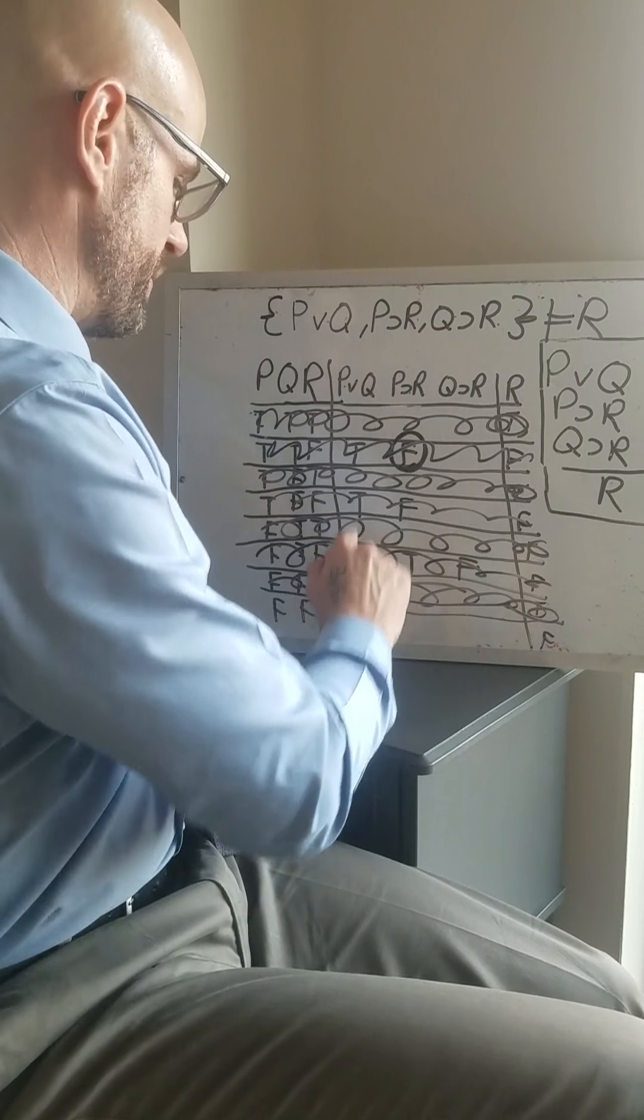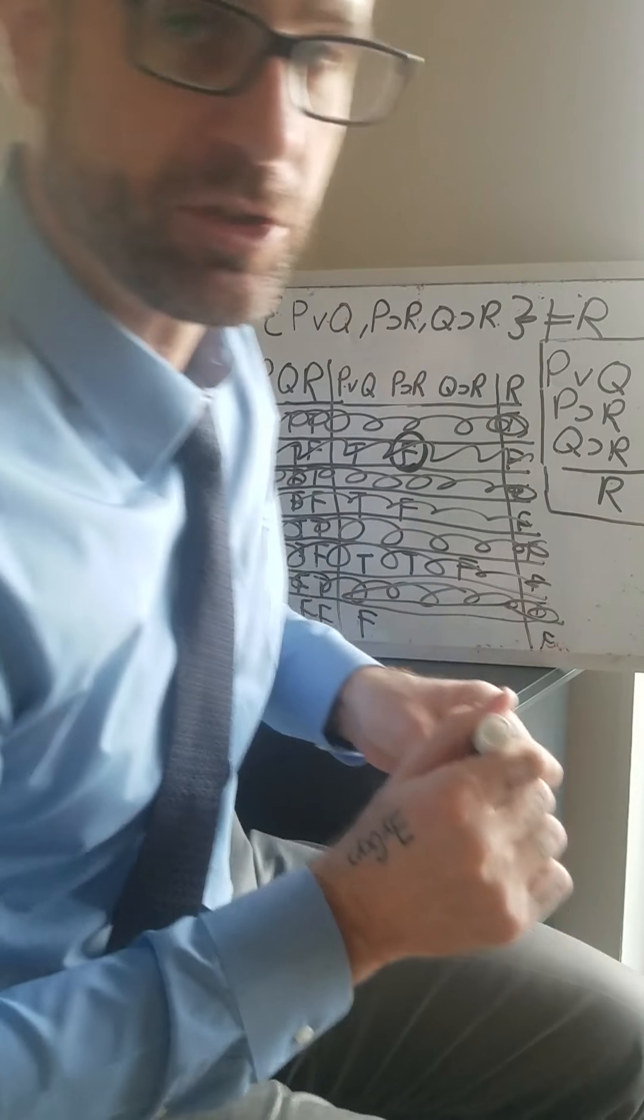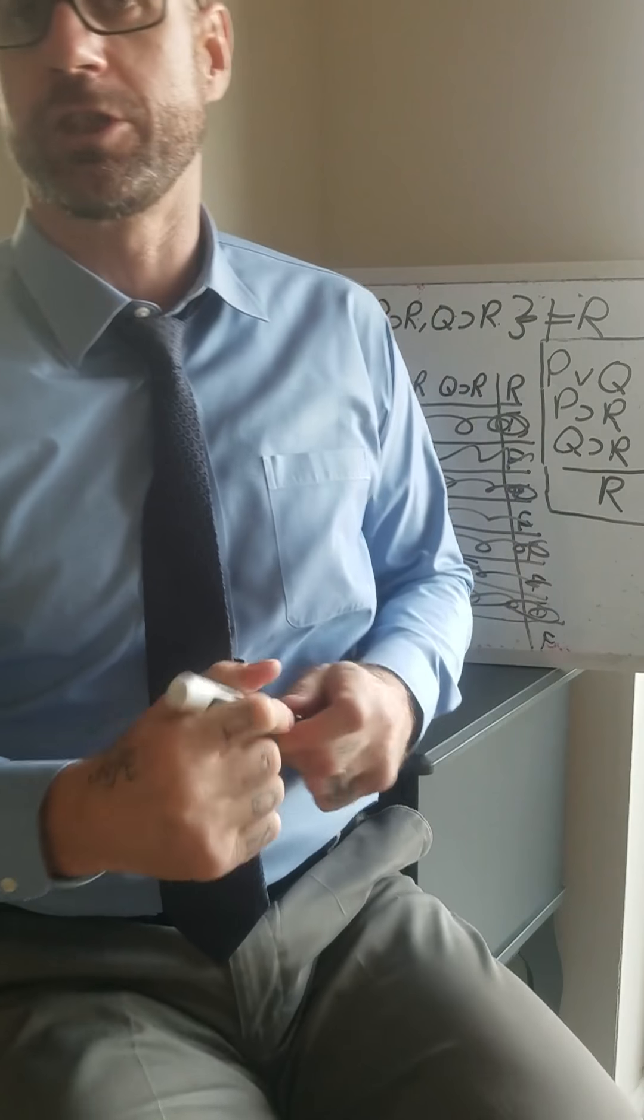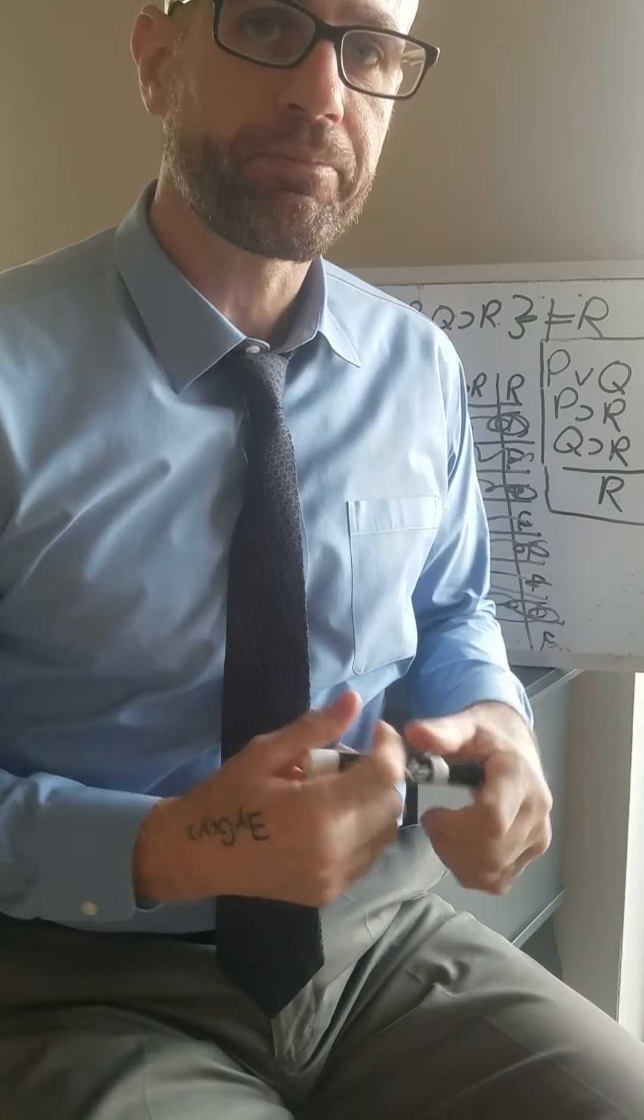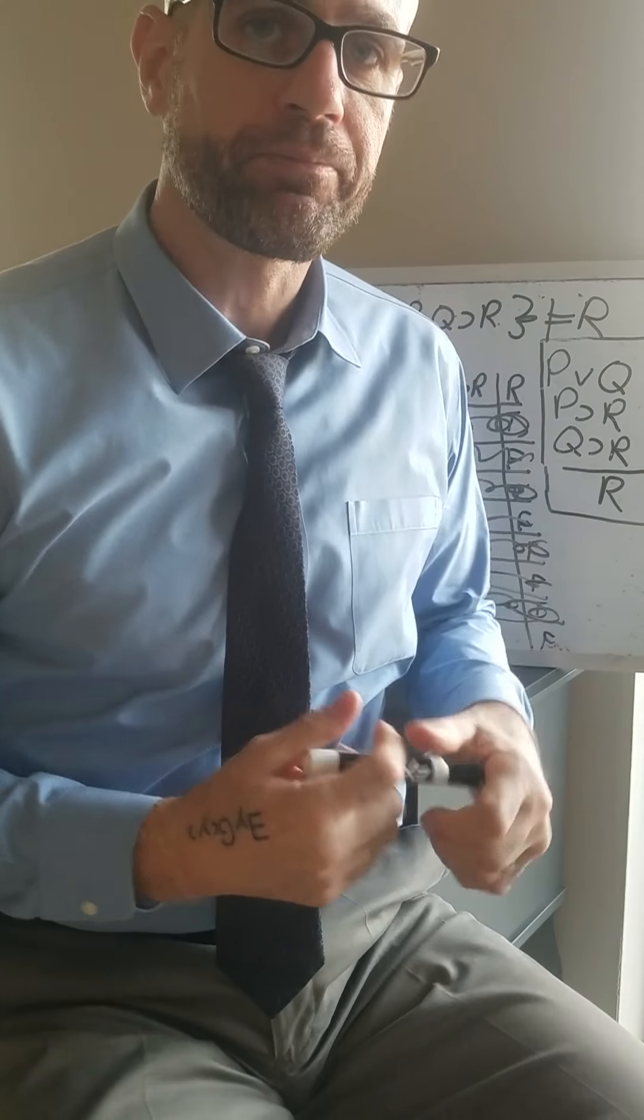What about this last row? P or Q are both false. And so this is false. That premise is false. And again, we don't have a counter example.